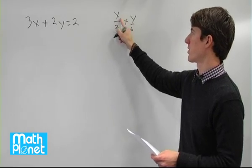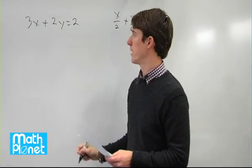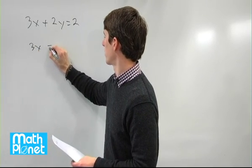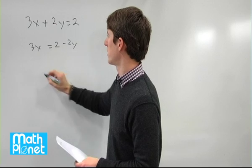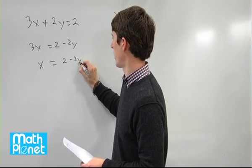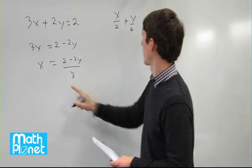So basically we need to replace x from this expression here. If we solve for x here in terms of y, we get 3x equals 2 minus 2y. Divide both sides by 3, x equals 2 minus 2y over 3. Now we can plug that in here.